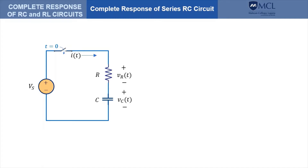Let's work on the series RC circuit first. Here we have a simple circuit with a switch that closes at t equals zero. We want to know the response of the circuit after the switch is closed. Response could mean what is the voltage across the capacitor or the current through the capacitor.